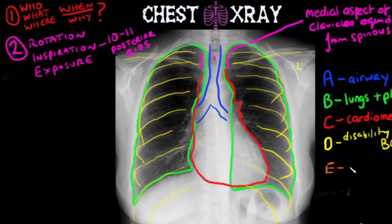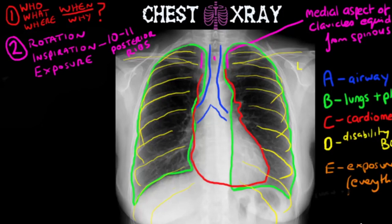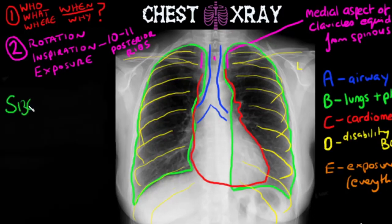Lastly, E stands for exposure and everything else. You are going to look at the skin, check for any subcutaneous emphysema — which is air in the skin — look for any fragments in the skin, and then look for artefacts such as ECG leads and oxygen tubing that could confuse your picture. You should also look for any tubes that might have been inserted into the patient, such as an endotracheal tube, a nasogastric tube, or any central venous access.